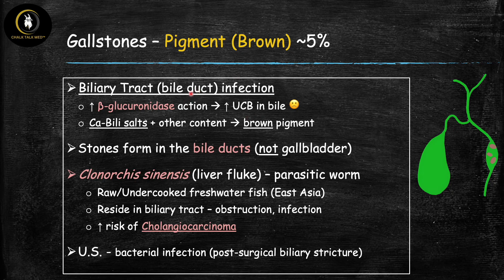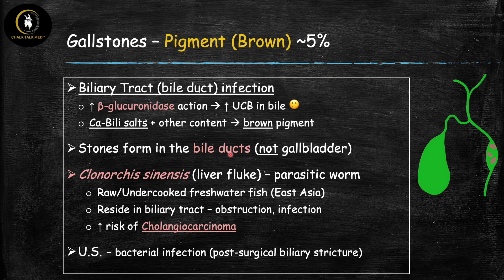Two important things to know about brown pigment stones. First, these stones form in the bile ducts, not in the gallbladder, because the problem — biliary tract infection — is occurring in the bile ducts. This contrasts with black pigment stones and cholesterol stones, which usually form in the gallbladder. The deconjugation of bilirubin and stone formation happen where the infection is occurring, which is in the biliary tract.